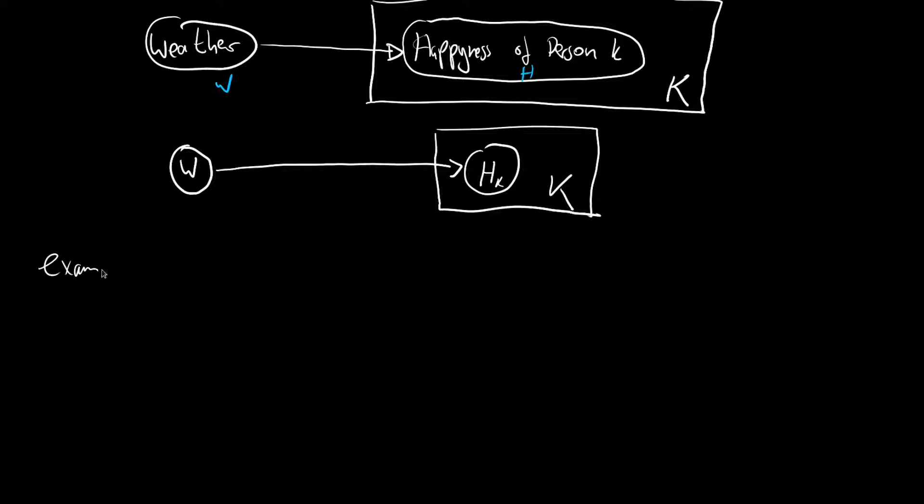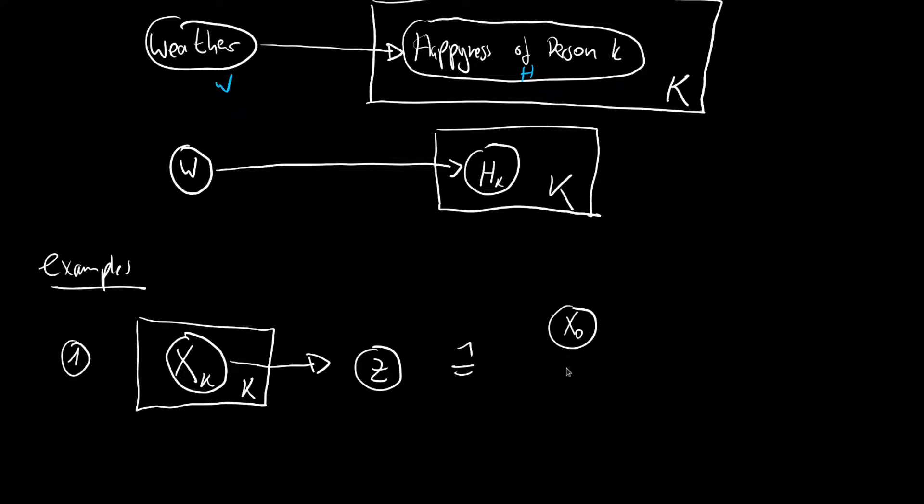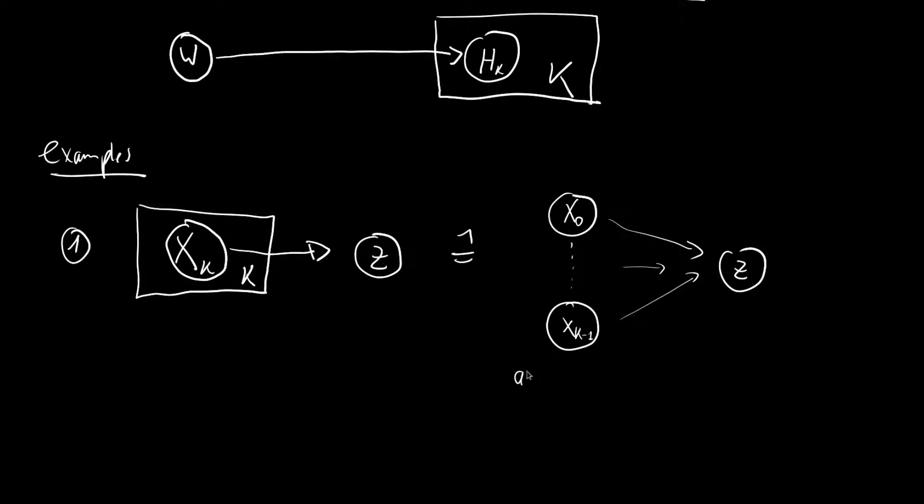Okay, let's look at some examples. And the first example will be the following. We have the other way around. So instead of the target node, we have the origin node in the plate notation. So we have a k. And let's call this no longer a w, because we're kind of losing the interpretation here, just be more abstract, and call this an x, index k. And this goes to a z. And this is equivalent, we are repeating this k times. So each of the k's is going to the z. So we have an x zero, all the way to an x k minus one, and we have one z. And all these are going there. So we can write this is equivalent to all x's go to one z.